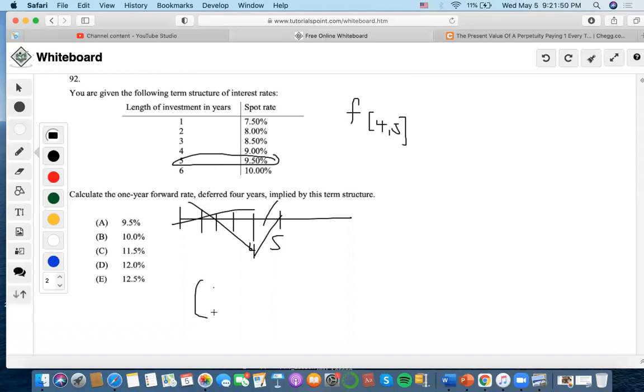So first of all, it's denoted as the whole thing spot rate, based on spot rate five equals this rate times spot rate four, right?